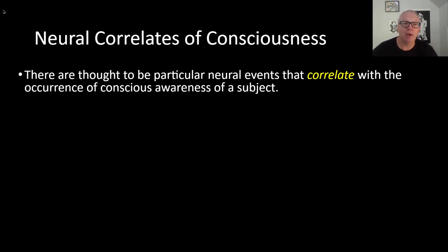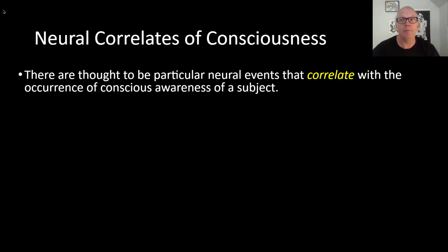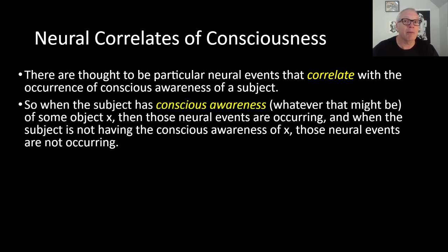One of the important concepts we've got to operate with in this context is something called the neural correlate of consciousness, or the NCC. There are thought to be particular neural events that correlate with the occurrence of conscious awareness of a subject. That is, there's neural activity that matches up with what it is to be conscious of that thing. So when the subject has conscious awareness of some object X, those neural events are occurring; and when the subject is not having conscious awareness of X, those neural events are not occurring. That's what it means to say it correlates.